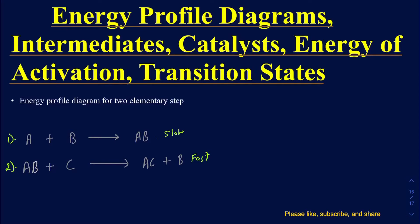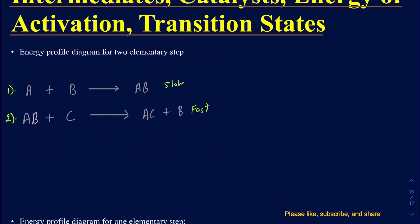Once you understand those, you can figure out three elementary steps and four elementary steps and so on. Suppose I have this reaction where A and B react to make AB, and this step is considered to be the slow step. This does not have to be the slow step — the second or even the third step could also be the slow step. In the second step, AB reacts with C to make AC and B again.